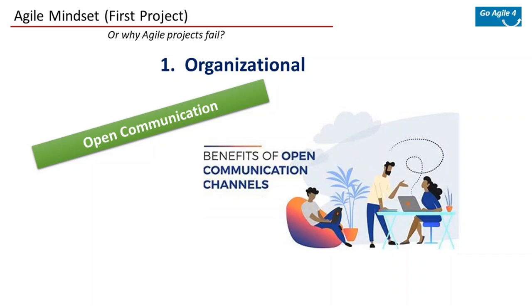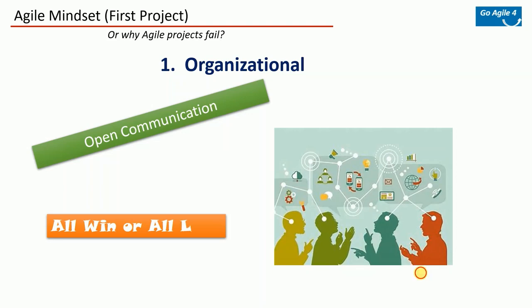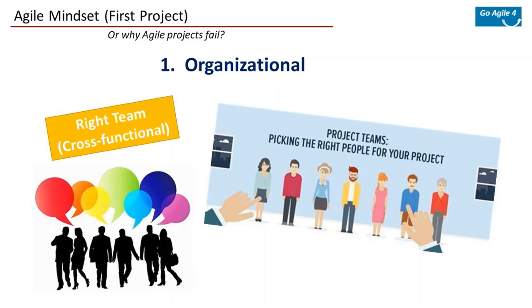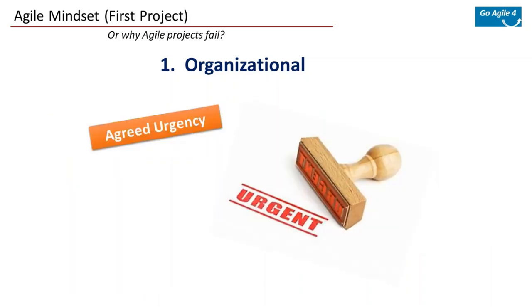Open communication is a big difference from traditional methods — agile encourages very open communication. Team spirit is very important; there is nothing like one person does well or one does bad — either you all collectively win or you all collectively lose. By right team I mean the right combination of people with all necessary skills. You need a cross-functional team; make sure you address the cross-functional needs for what the project requires to be a success.